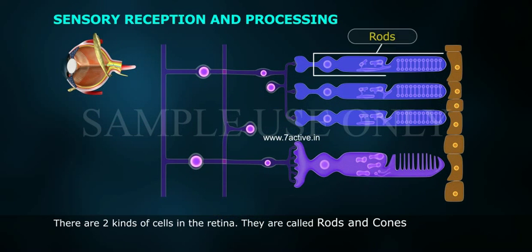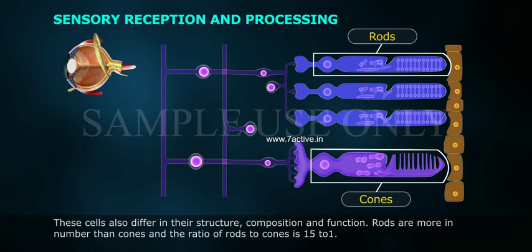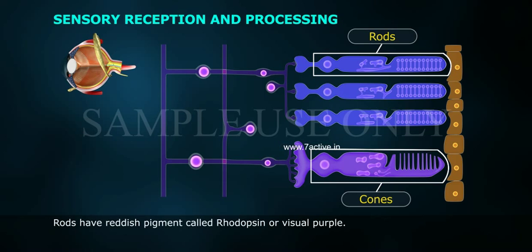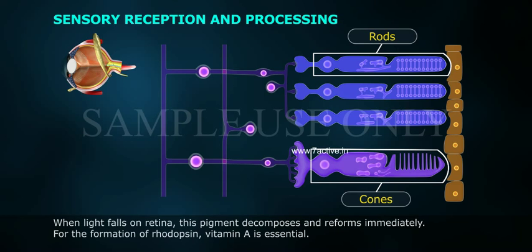The two types of retinal cells are called rods and cones. These cells differ in their structure, composition, and function. Rods are more in number than cones; the ratio of rods to cones is 15 to 1. Rods contain a reddish pigment called rhodopsin, or visual purple. When light falls on the retina, this pigment decomposes and reforms immediately. For the formation of rhodopsin, vitamin A is essential.